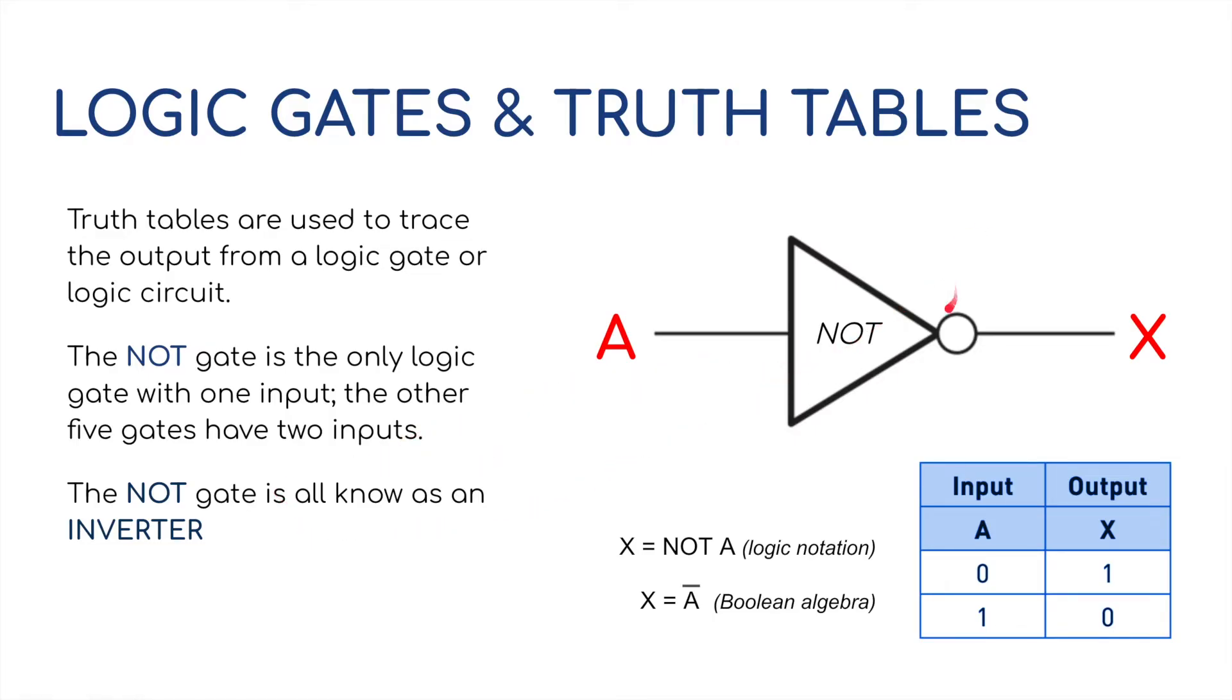The NOT gate is the only logic gate that has one input, and the other five gates have two inputs. The NOT gate is also known as the inverter. For example, zero going in. If A is set to zero, then the NOT gate will invert it, and it will be a one. And alternatively, if a one goes in, if A, the input, is one, then the output would be zero. In logic notation, X is written as NOT A, but in Boolean algebra, X is seen as A but with a line over the top of it, which basically means NOT A.